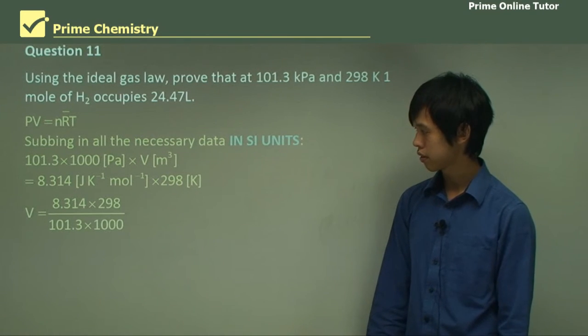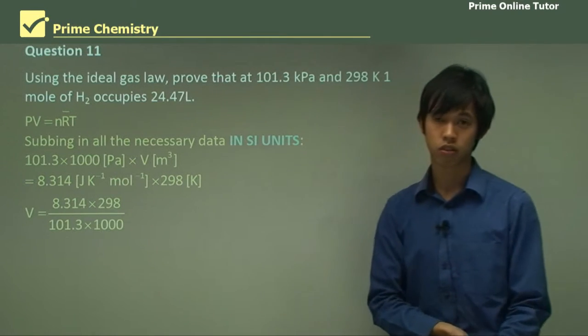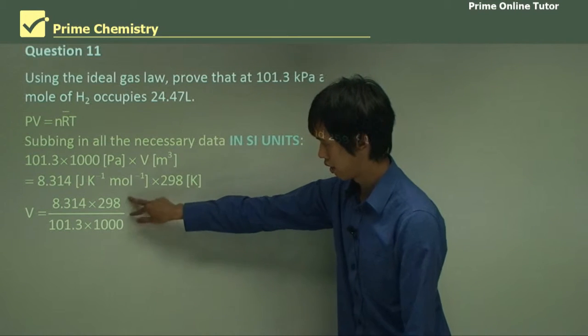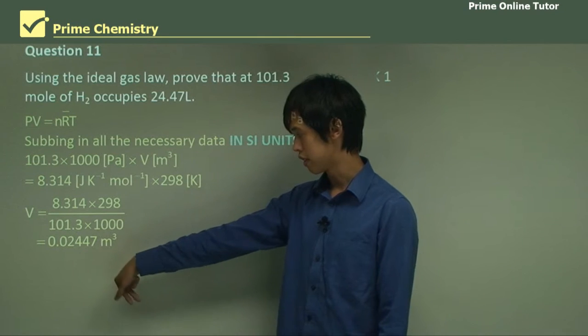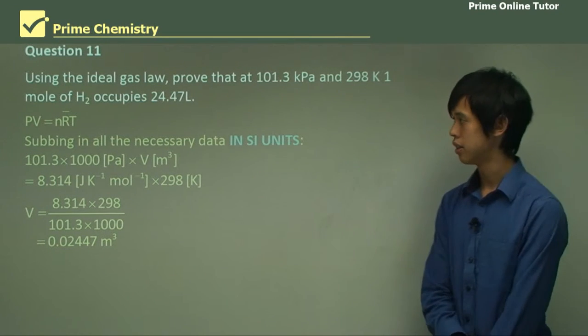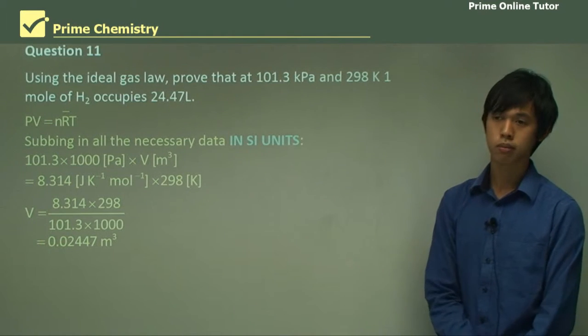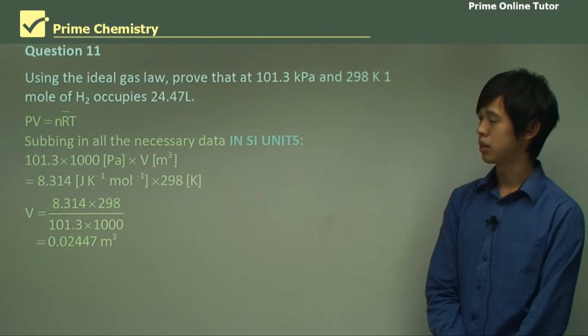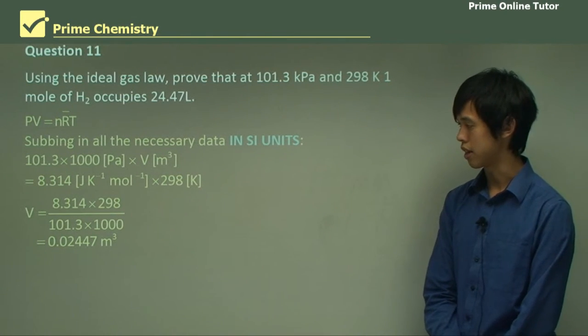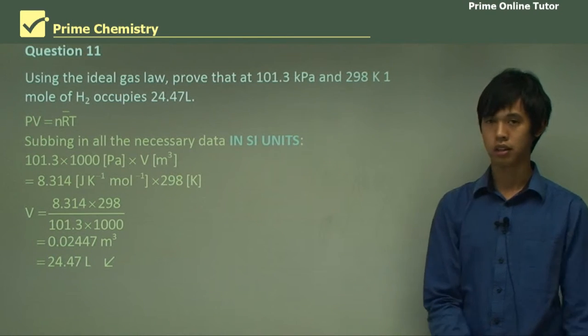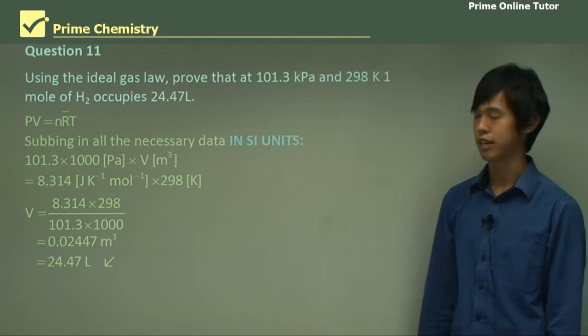And then we just, we basically rearrange, so V is the subject of the formula. And this is what we get. And finally you get 0.02447 meters cubed. Now that doesn't look like that. Well, the numbers are sort of right, but the units are wrong. So how do we convert from meters cubed to liters? Well, we know that there are 1,000 liters in every meter cubed. So we will multiply that by 1,000. And lo and behold, we get the right answer. So it's just subbing it into a formula, basically.